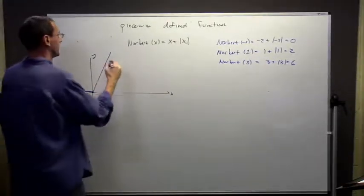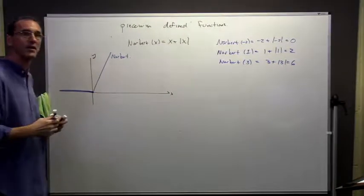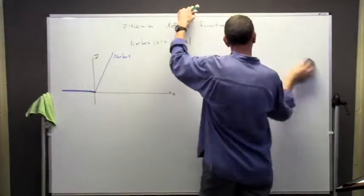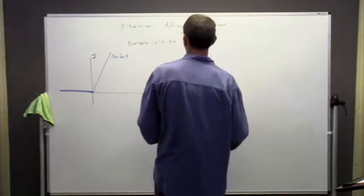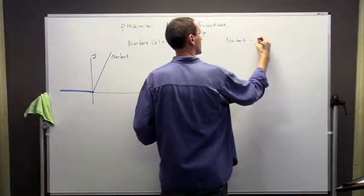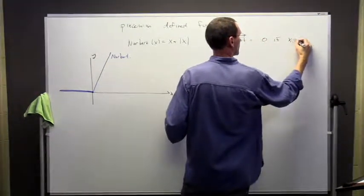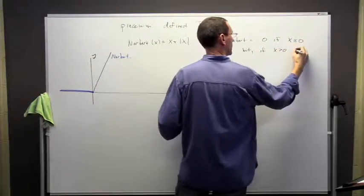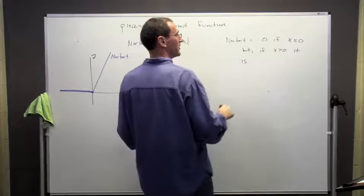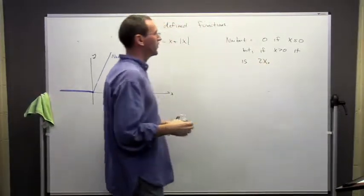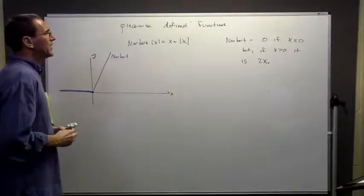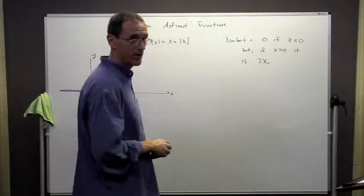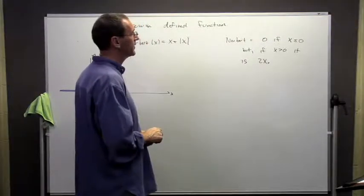So Norbert looks like that. Now, suppose I want to express this in a different way. One way I could do it would be like this: it's going to be 0 if x is less than or equal to 0, but if x is a positive number, the value of Norbert is 2x. That's perfectly valid. Unfortunately, that's not arcane enough, and we're going to need some notation to talk about this in a more compact way.